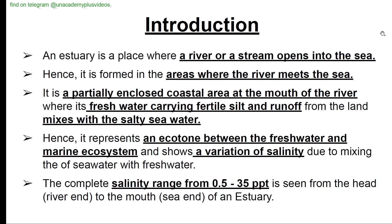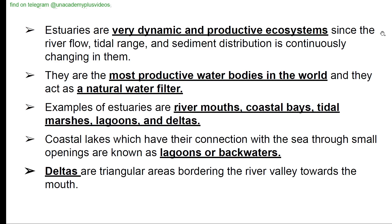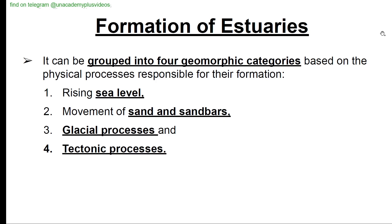Estuaries are very dynamic and productive ecosystems since river flow, tidal range, and sediment distribution continuously change within them. They are the most productive water bodies in the world and act as natural water filters. Examples include river mouths, coastal bays, tidal marshes, lagoons, and deltas. Coastal lakes connected to the sea through small openings are known as lagoons or backwaters. Deltas are triangular areas bordering the river valley towards the mouth.